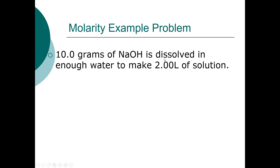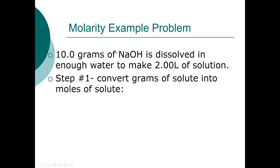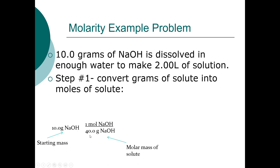Example: if you have 10 grams of NaOH dissolved in enough water to make 2 liters of solution, what's the molarity? Step one: convert grams to moles, since molarity uses moles over liters. Write what you have, draw a division bar, put the molar mass of NaOH (from Na + O + H on the periodic table) on the bottom, and 1 mole of NaOH on top. Solving gives 0.25 moles of NaOH.